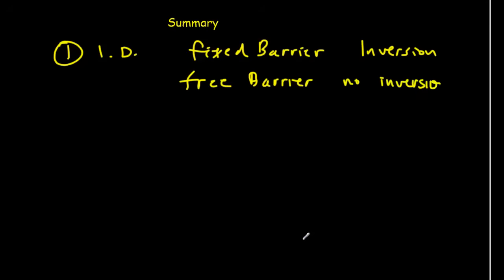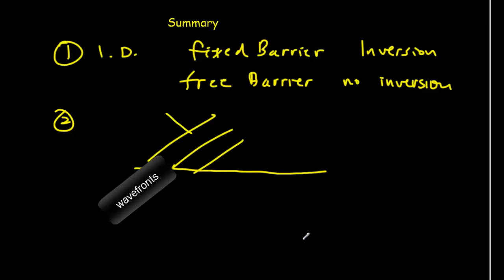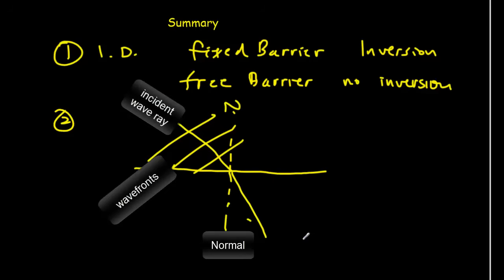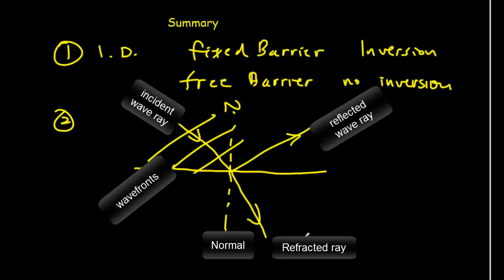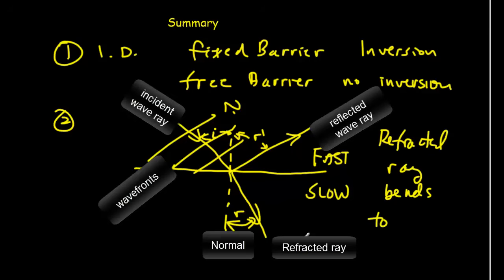As a summary for this lesson, first thing we learned was that in 1D, we had 1D reflection. If you've got a fixed barrier, then you get the 180 degree phase change or the inversion. If you've got a free barrier, there's no inversion. And then we learned how to do these two-dimensional diagrams. We could have wave fronts, wave ray, a normal, a refracted ray, incident ray, reflected ray, angle of incidence, angle of reflection, and angle of refraction. And we learned that if we're going from a fast to a slow medium, the refracted ray bends towards the normal.